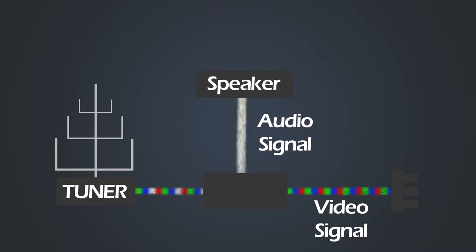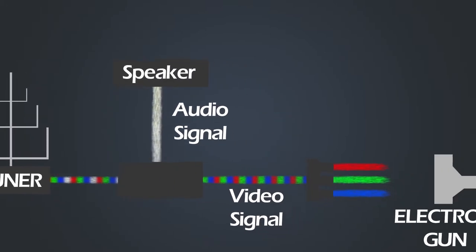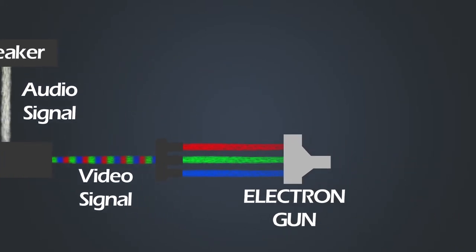Your TV signal comes in to your TV, the audio goes out to your speaker system and the video signal gets split up into red, green and blue and goes to an electron gun.